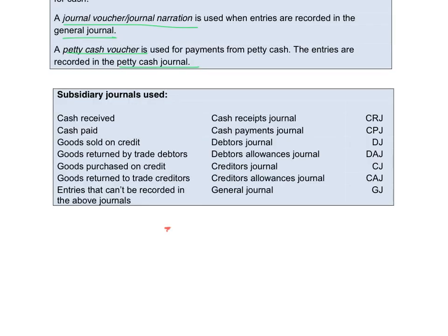When we receive cash, it doesn't matter what we receive the money for — we will record it in the cash receipts journal. When we pay money, it will be recorded in the cash payments journal. Any payments except payments out of petty cash will be recorded in the cash payments journal.